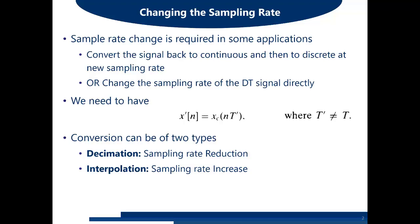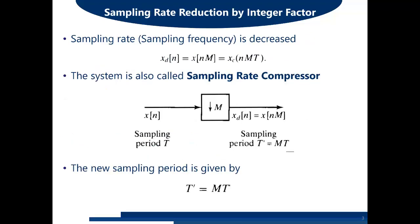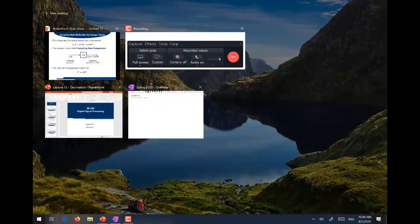Sampling rate reduction is always achieved through an integer factor. The decimated signal x_d(n) equals x(nM), where M is an integer — the decimation factor — describing how we decimate the signal.